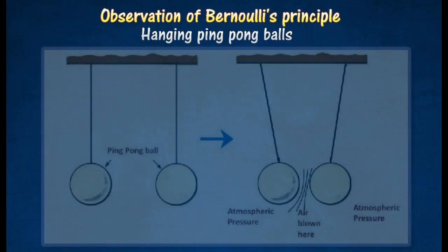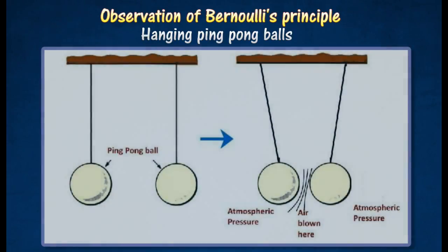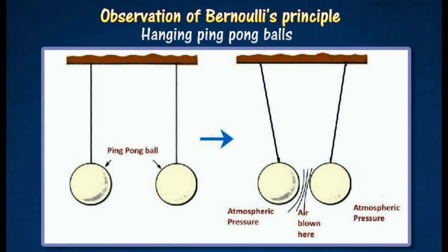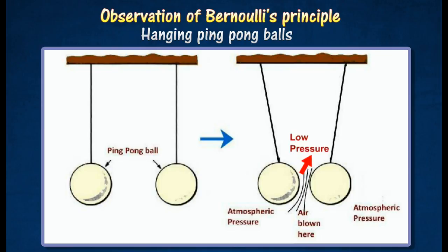When air is blown vigorously between two ping pong balls that are suspended vertically, the two ping pong balls move closer to each other. The air blown at high speed creates a region of low pressure in the space between the two ping pong balls.